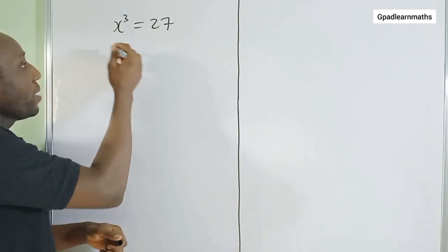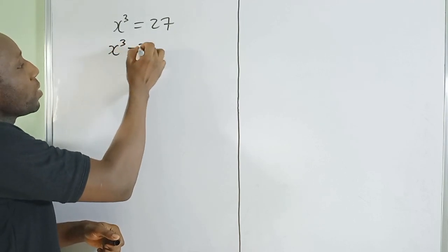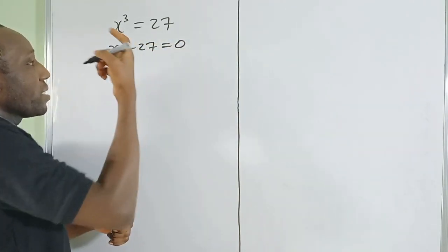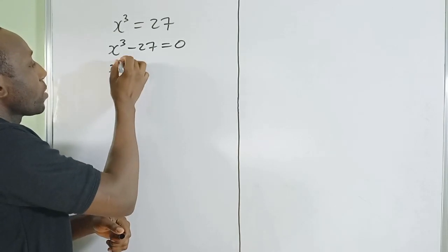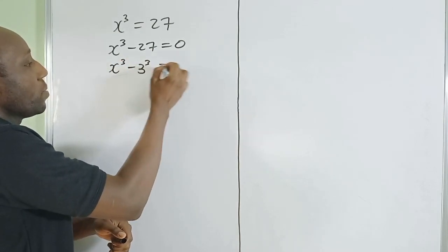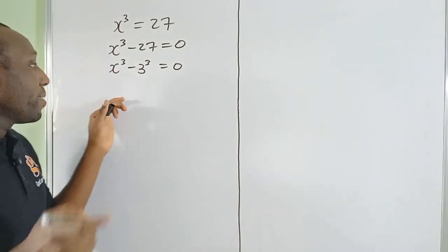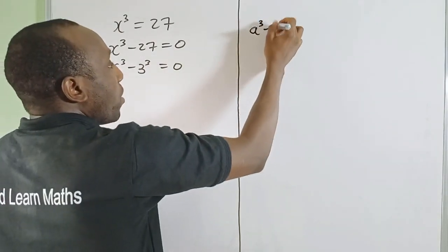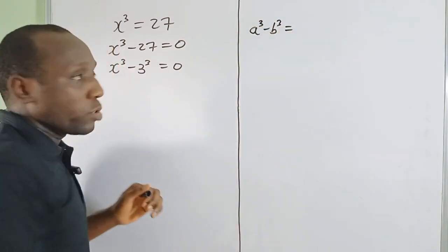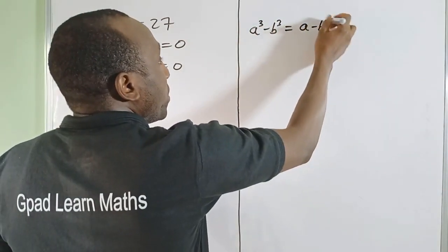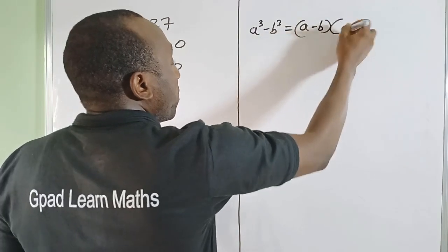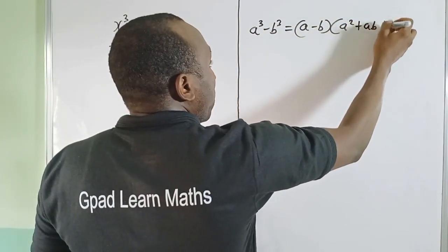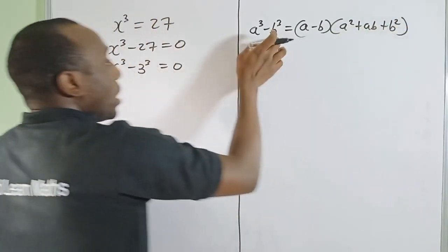First, we are going to move 27 to the left-hand side so it equals zero. Let's write 27 as 3 raised to the power 3. We'll use one of the algebraic identities: if you have a³ minus b³, this is equal to (a − b)(a² + ab + b²).